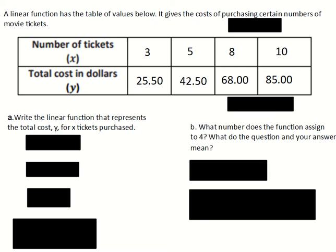So the first column of the table: 3 tickets cost $25.50. The second column means 5 tickets cost $42.50. The next column, 8 tickets cost $68, and the last: 10 tickets cost $85.